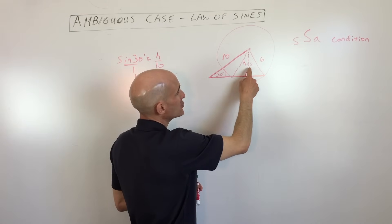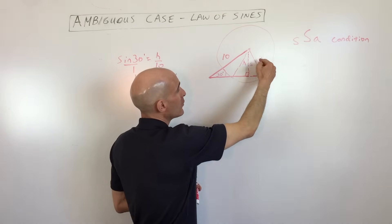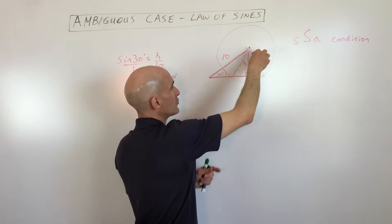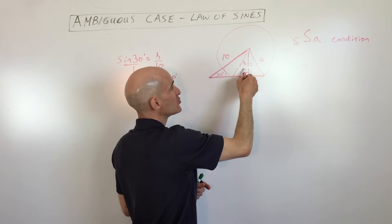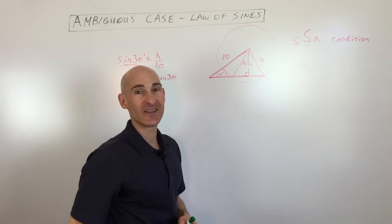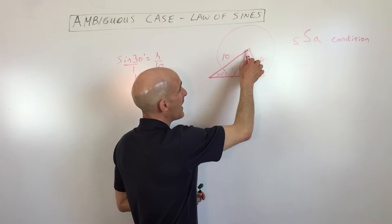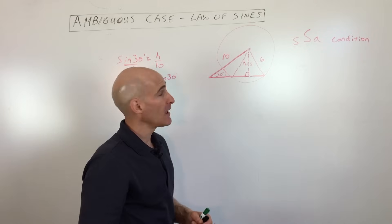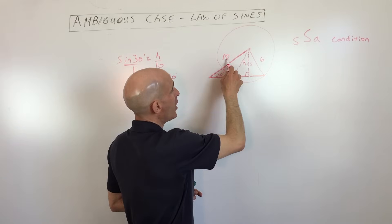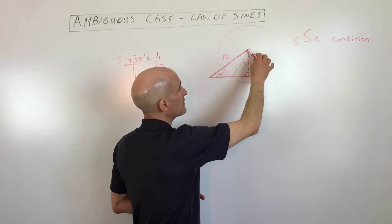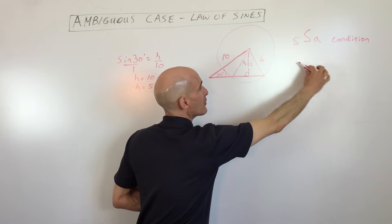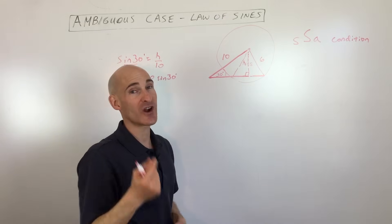If this side here was actually shorter than the altitude, like four, when you go to rotate that, it's going to be too short. It won't even be able to reach that opposite side. There'd be no triangle. And then if it was exactly five, of course, it would be a right triangle. And if this side here is longer than ten, let's say it was eleven, the only way it could swing is out this direction. So you would only have one triangle possible.